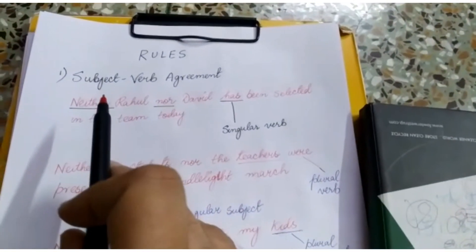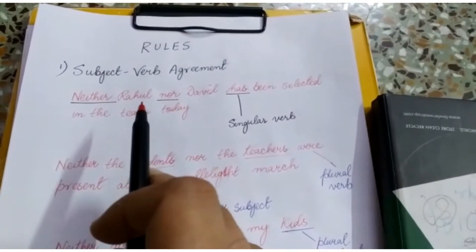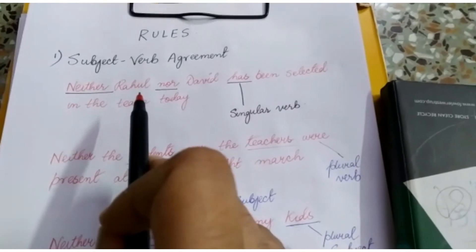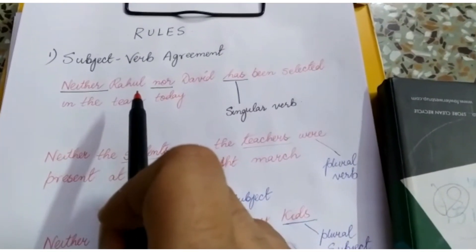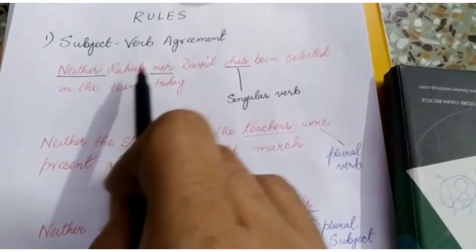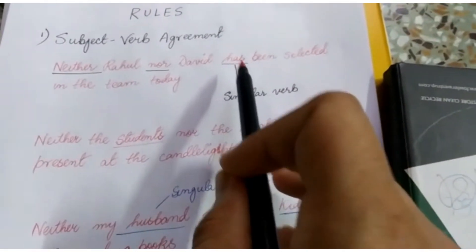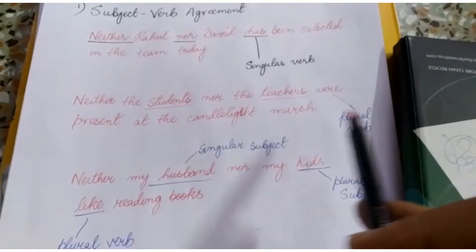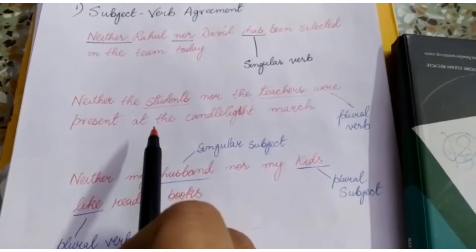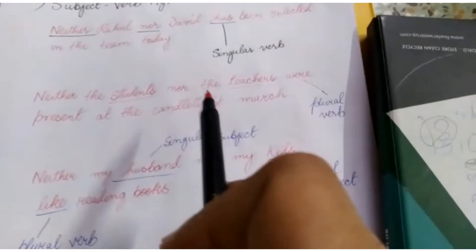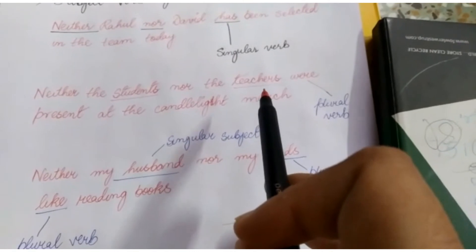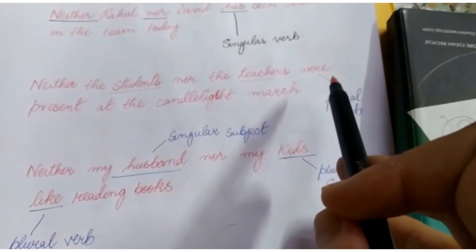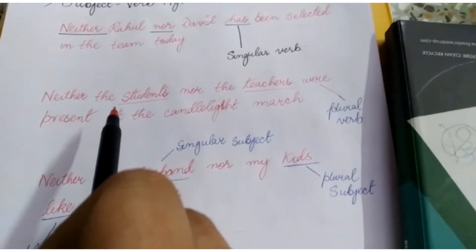There are certain rules which need to be followed when using correlative conjunctions. Rule one: when there are two singular subjects in a sentence — for example, 'Rahul' and 'David' are both singular — the verb following them also has to be singular. In 'Neither the students nor the teachers were present at the candlelight march,' both 'students' and 'teachers' are plural subjects, so the verb following them must be a plural verb.